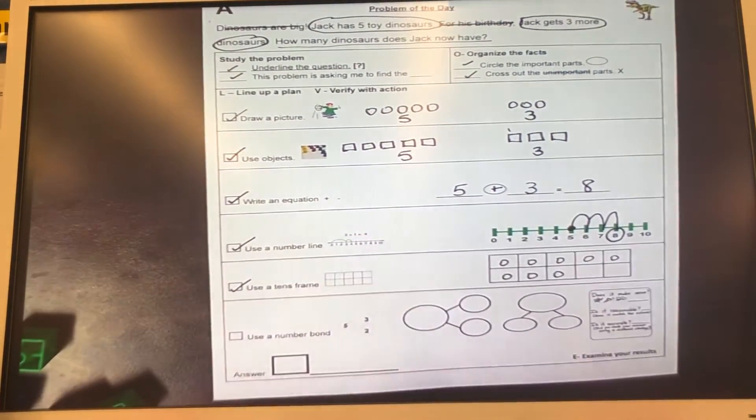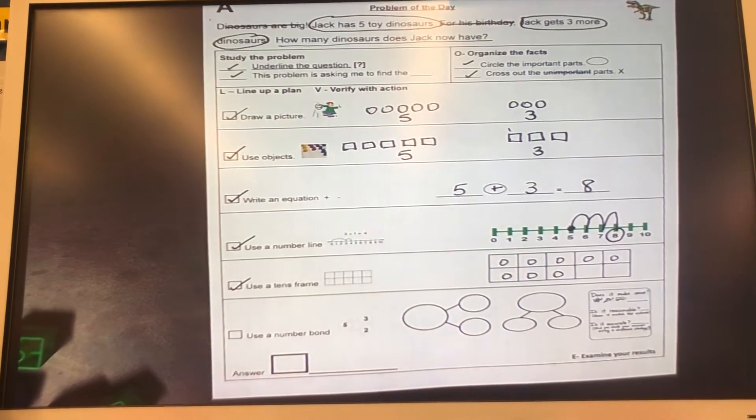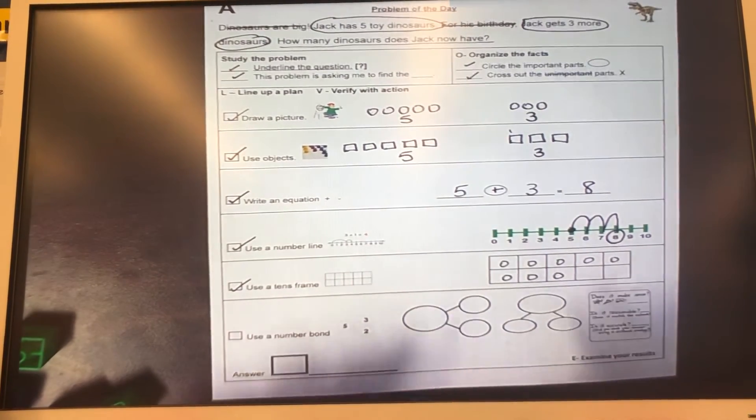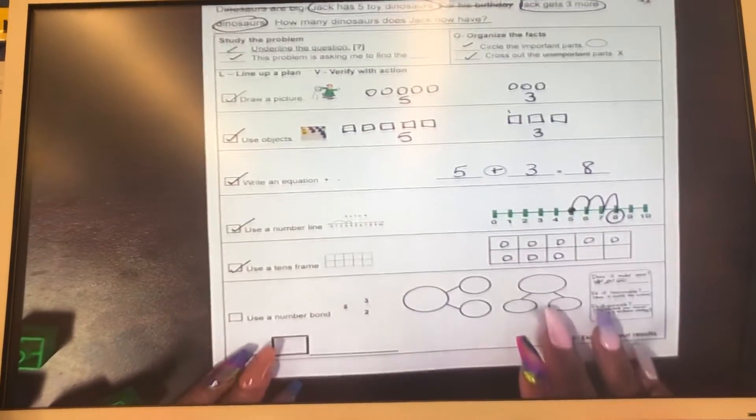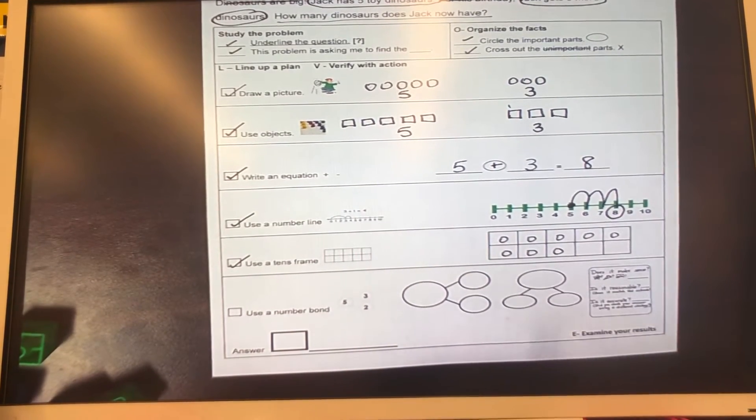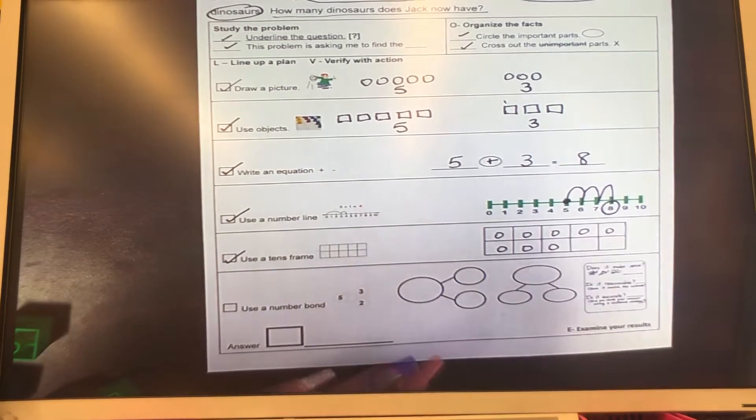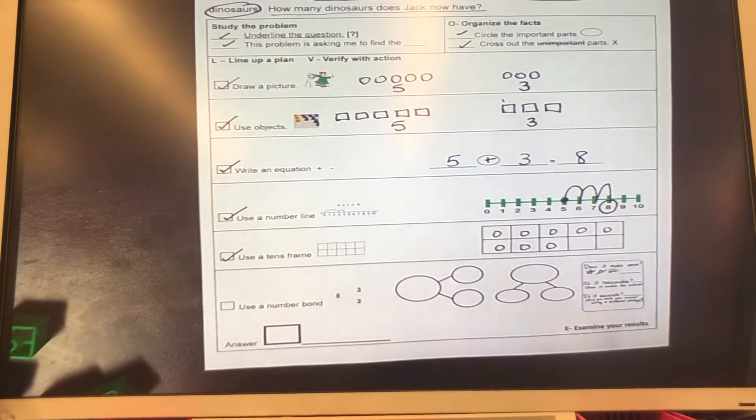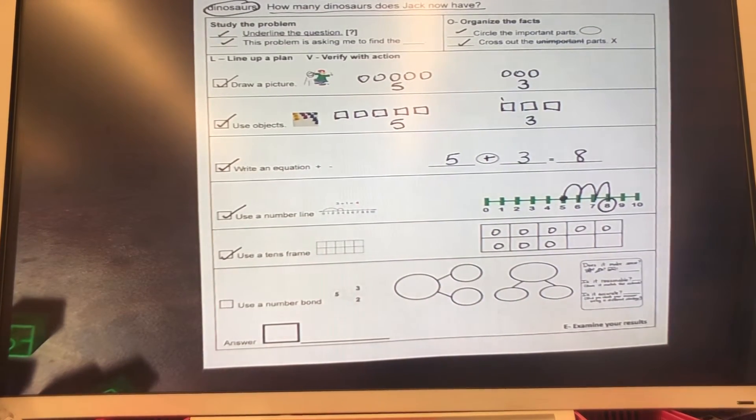And we have eight, eight circles. All right. So now we have our number bond. Now remember, you want to be very careful when you're doing your number bond. You want to label your number bond. So you plug in the numbers in the right circles.